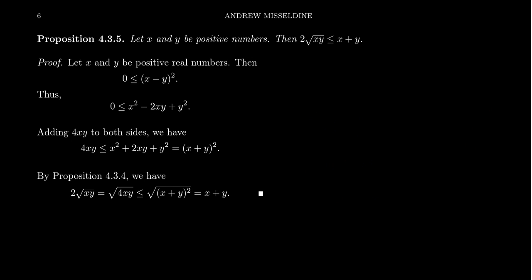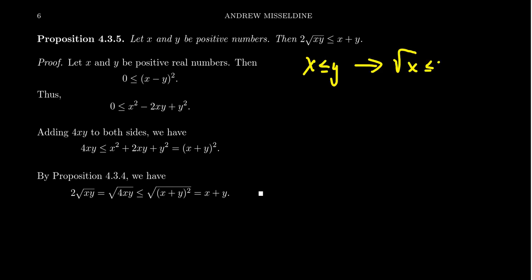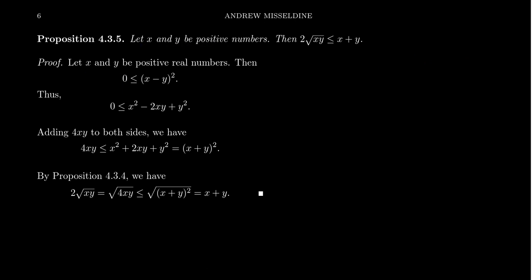Now let's look at another example of a direct proof. Let x and y be positive real numbers. Then two times the square root of xy, the product, is less than or equal to x plus y. How do we start? We mention our assumptions: let x and y be positive numbers. Unlike the previous example, there's no extra condition to assume — so we start by stating that x and y are positive real numbers. Then, since they're real numbers, we know that 0 is less than or equal to (x minus y) squared.